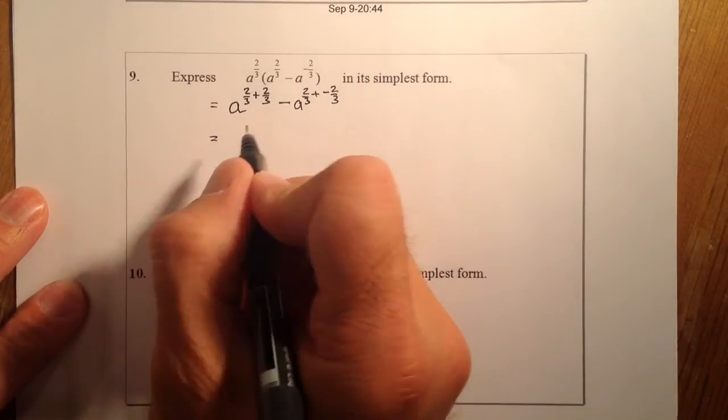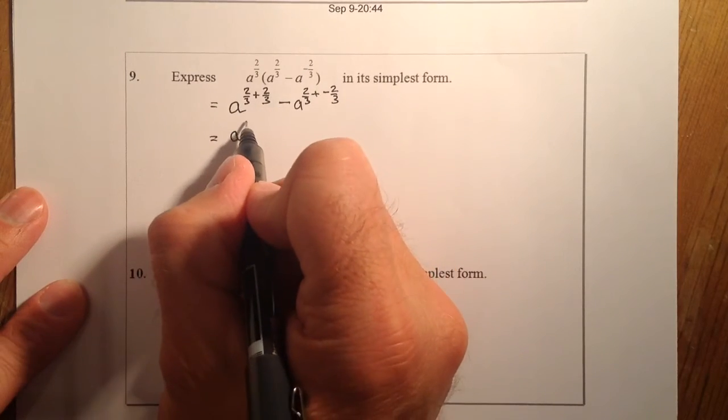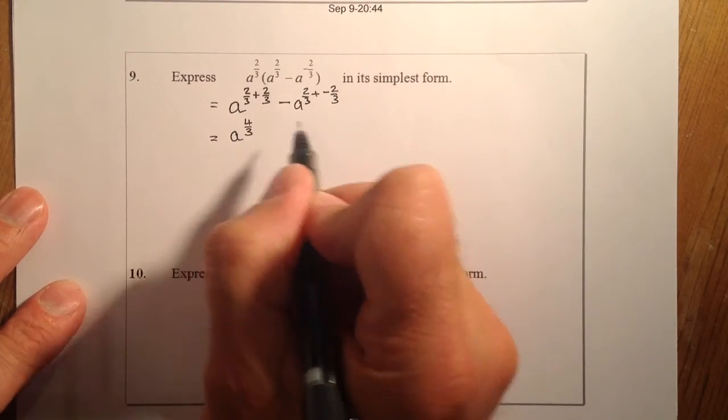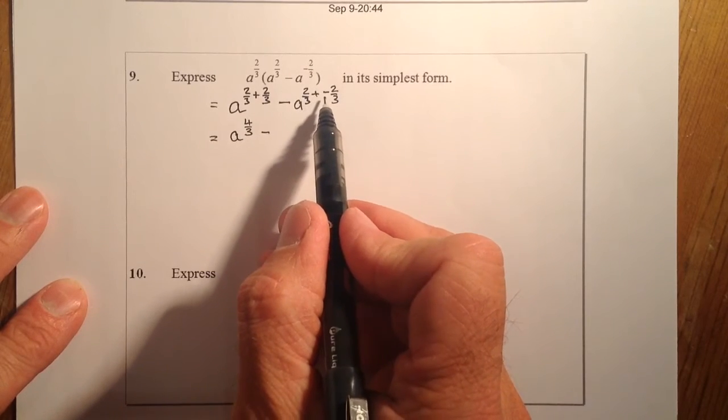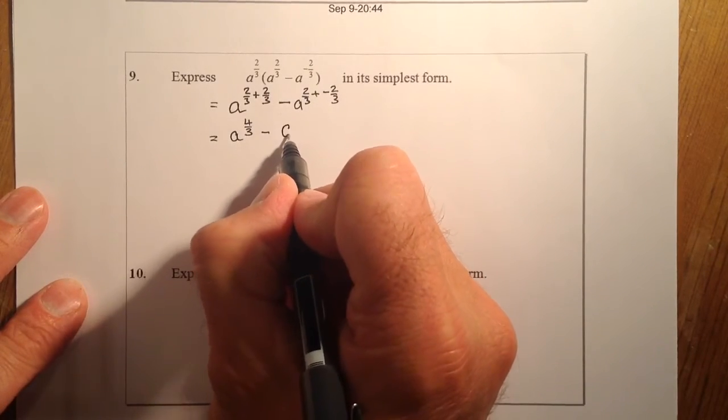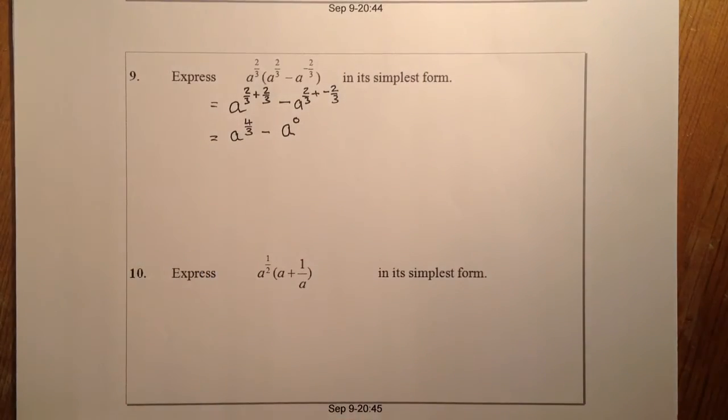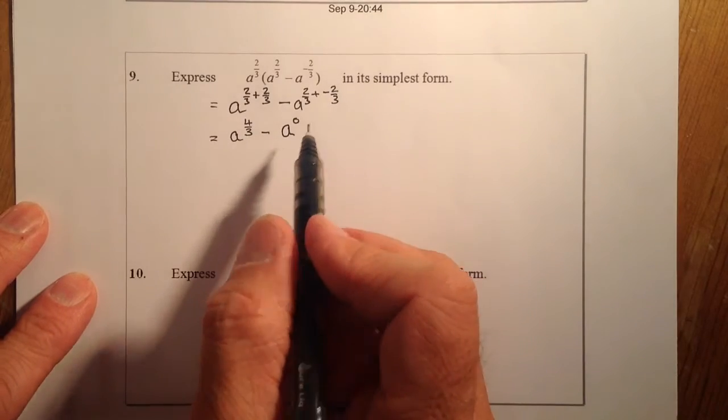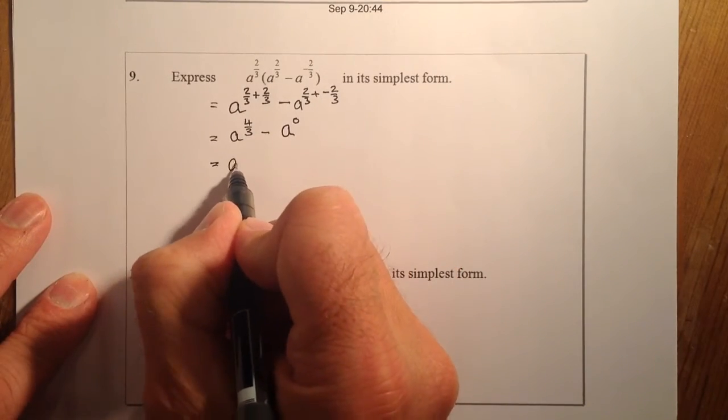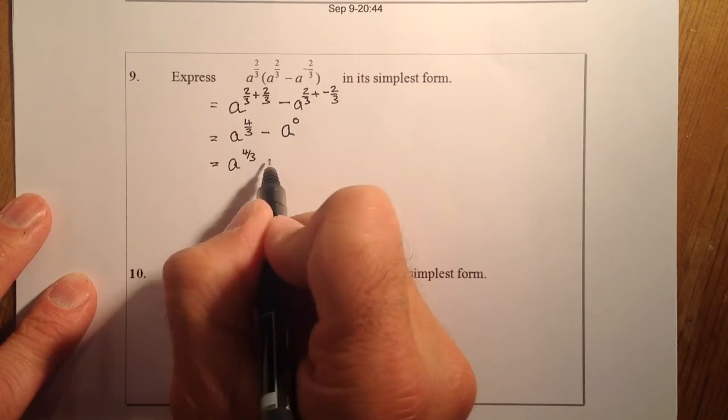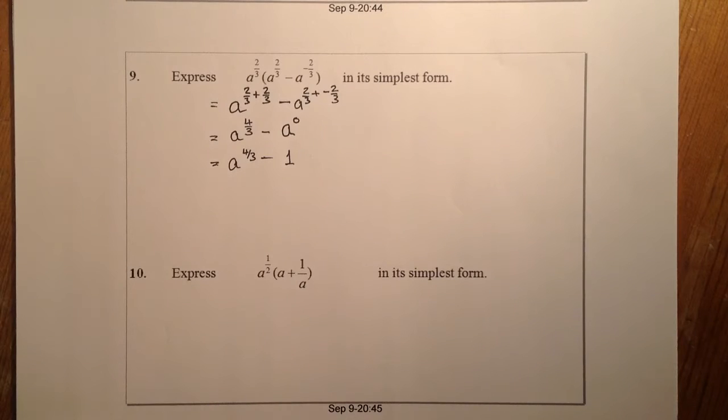So sorting out the indices, so that's going to be a to the power of, if I've got 2 thirds plus another 2 thirds, I must have 4 thirds, minus, and I'll be a to the power of 2 thirds minus 2 thirds, so that gives me a to the power of 0. Now, just finally, the only last thing that I'm going to do to try and get it into its simplest form is that I know that a to the power of 0 is equal to 1, and that's going to be my final answer there.